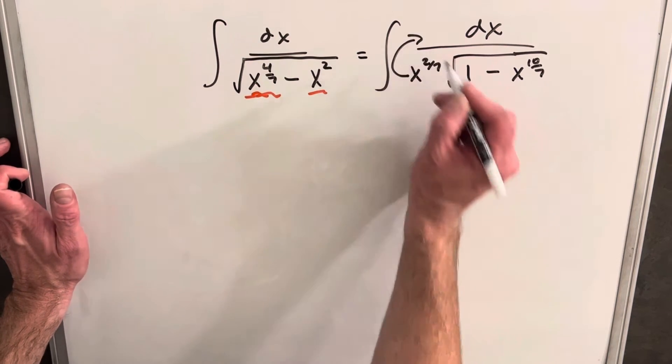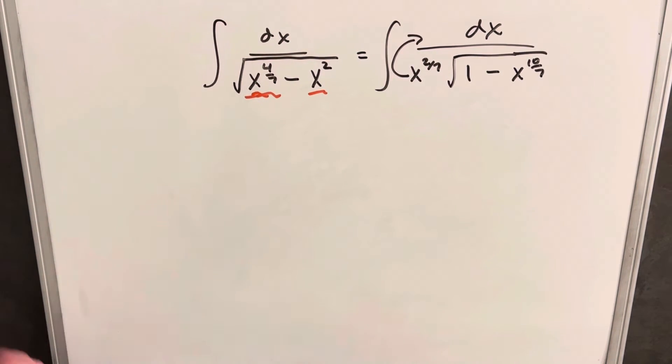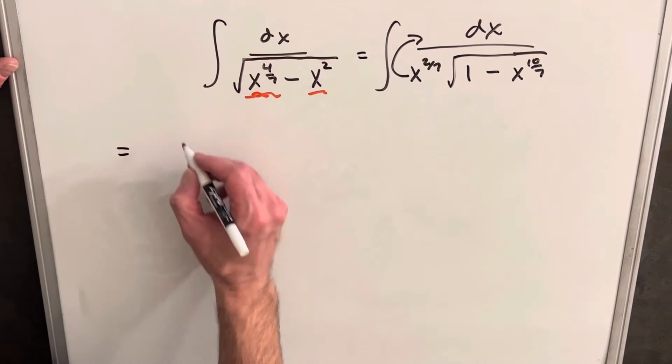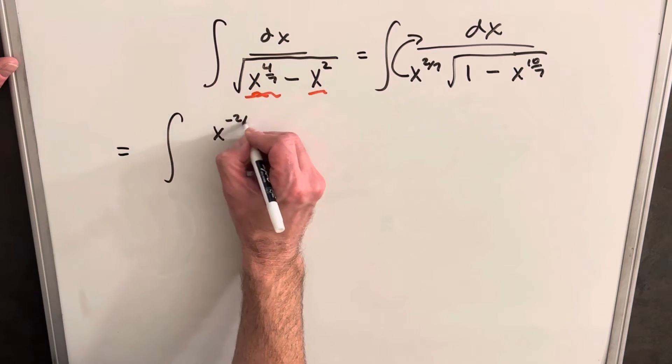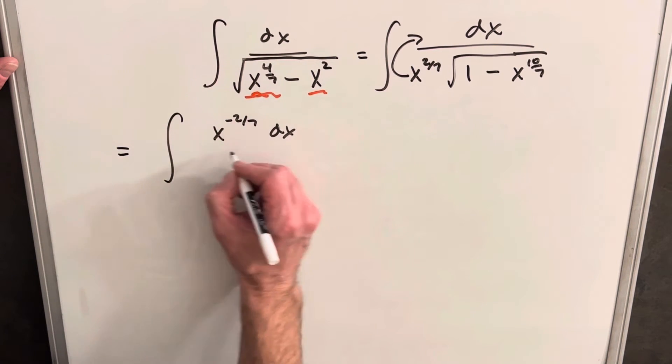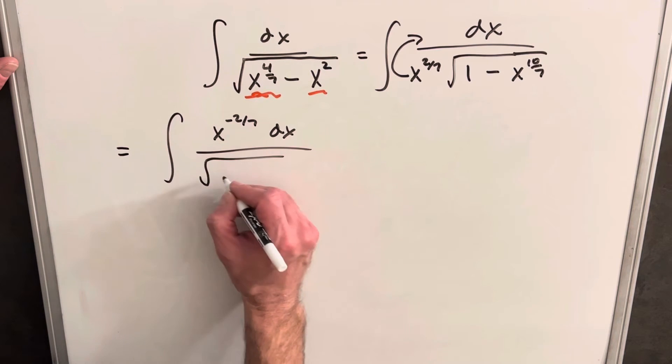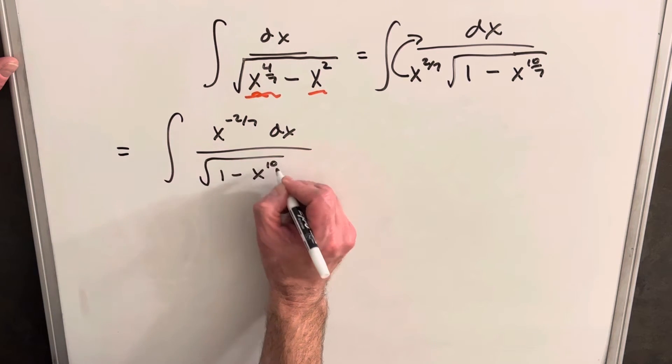Then what we want to do is just get this into the numerator, trying to set this up for a u substitution. So we're going to have x to the minus two over seven dx, one minus x to the ten over seven.